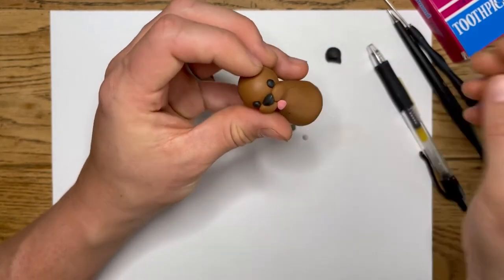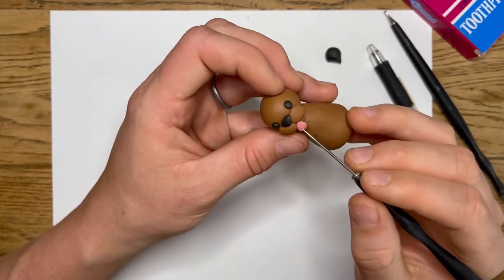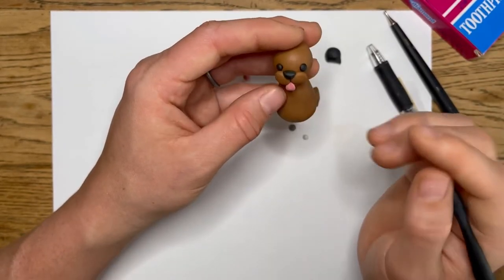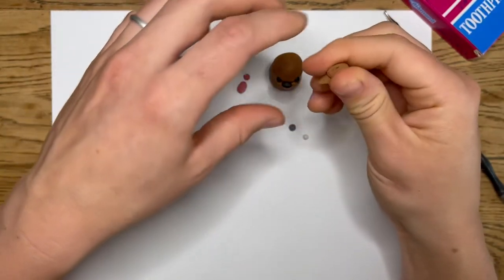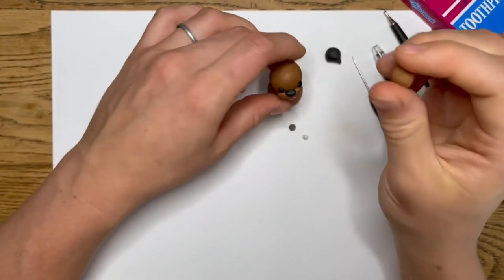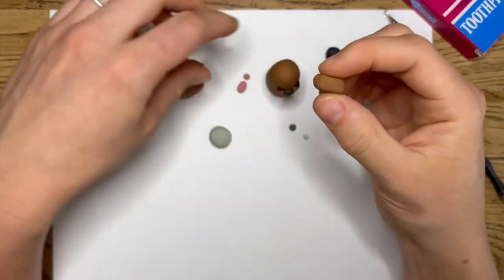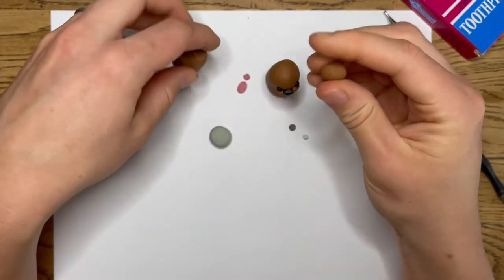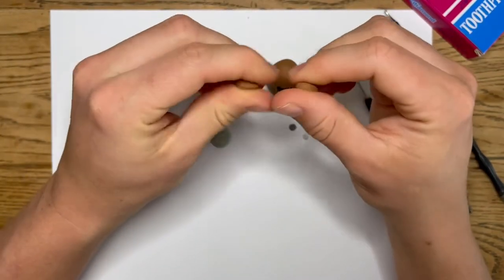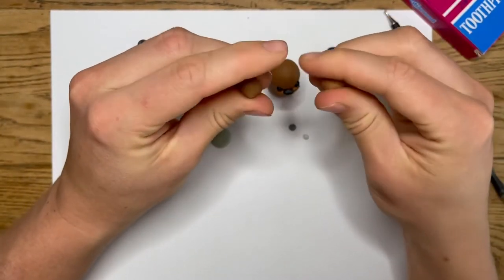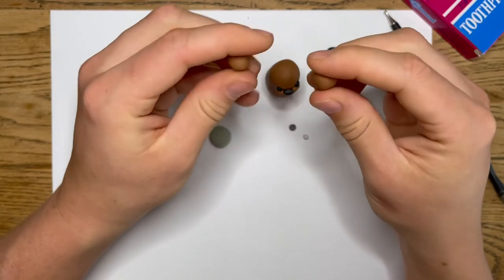Now we're going to take about twice as much as we took for these portions, and we're going to roll them into balls. We're going to take two of those to make the ears. Now your dog may have pointed ears, floppy ears, whatever type of ears you want. I'll show you how to do several types.